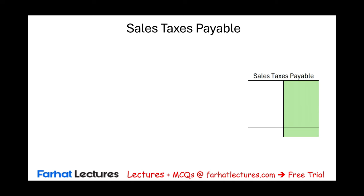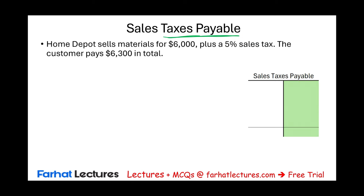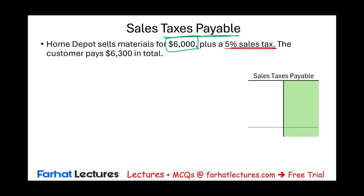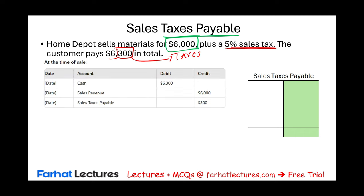Let's look at a journal entry for sales taxes payable. Assume Home Depot sells materials for $6,000 and collects 5% sales tax. The customer pays $6,300 in total — $6,000 for the goods and $300 in taxes. The journal entry is: debit Cash $6,300, credit Sales Revenue $6,000, and credit Sales Taxes Payable $300. This creates a liability called sales taxes payable.